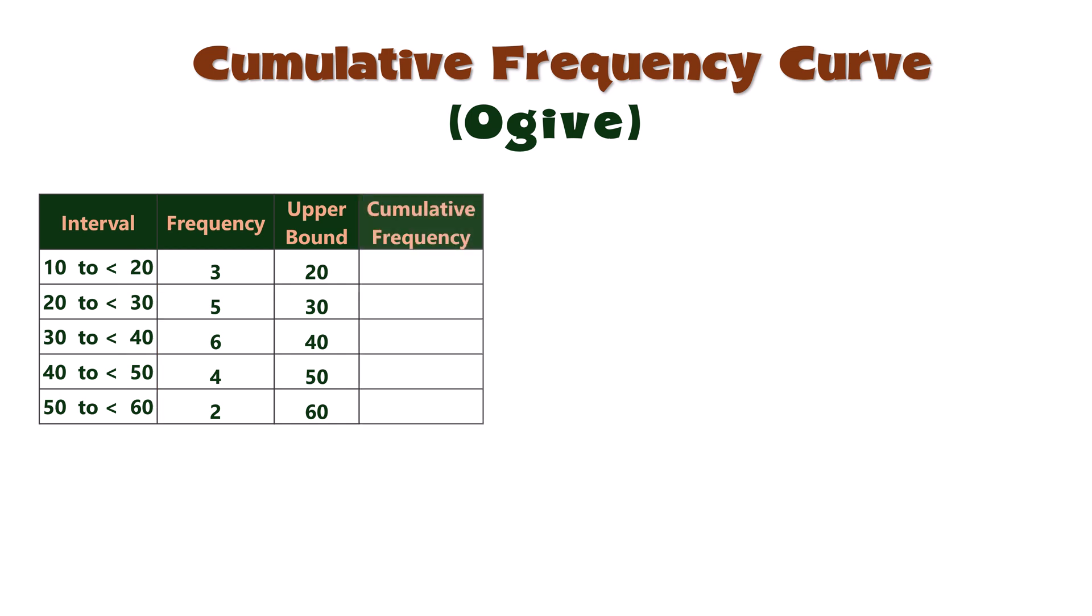Next, we compute the cumulative frequencies. The first cumulative frequency is simply the frequency of the first class, which is 3. For each subsequent class, we add the current frequency to the previous cumulative total.